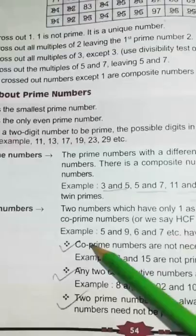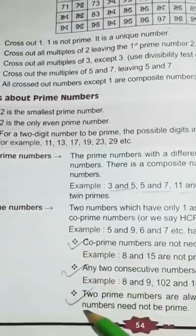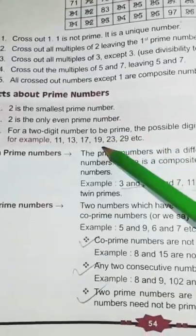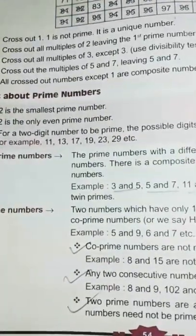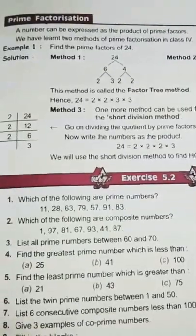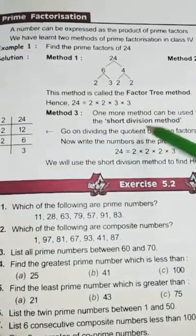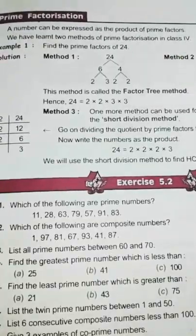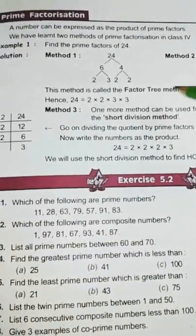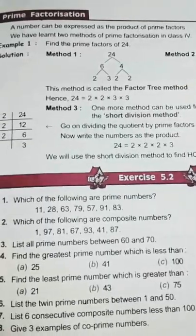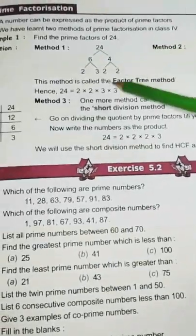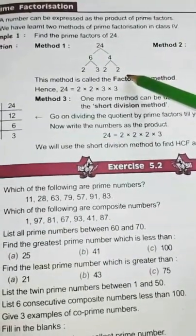So, children, these points you have to learn and remember. And these facts also you remember. Then, comes to prime factorization. A number can be expressed as the product of prime factors. Children, you have learnt two methods of prime factorization in class 4. Let's see, this is the first method and this is the second method. This is known as tree method.